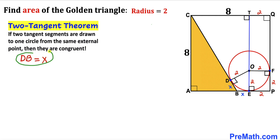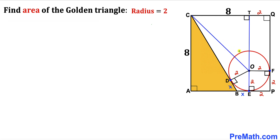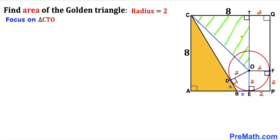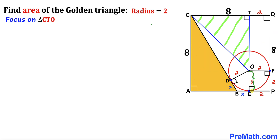In the next step I have connected center O with point C, and as a result we get right triangle C, T, O. The whole side length of the square is 8 units, so that full side is 8 units. The radius is 2, so length TO equals 8 minus 2, which gives us 6.